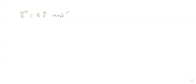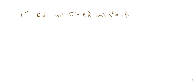Let us assume that E-bar is in the y-direction, so we write E j-cap. We assume that the magnetic field B-bar is in the z-direction, which we write as B k-cap. And the velocity vector V-bar is in the x-direction, so we write V i-cap, where E, B, and V are the magnitudes.